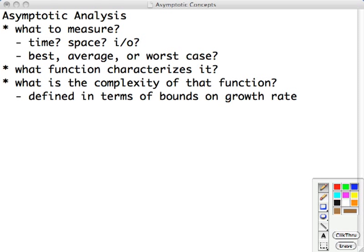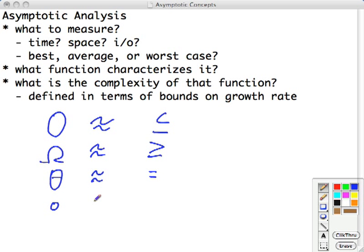We can make an analogy between these notations and ordinary arithmetic equality and inequality relations. So, just a quick preview, we're going to study something called big O, which is sort of like, this is just an analogy, less than or equal to. We're going to have omega, which is analogous to greater than or equal to. Theta, which is kind of like equality. Little o, which is analogous to less than, and little omega, which is analogous to greater than.